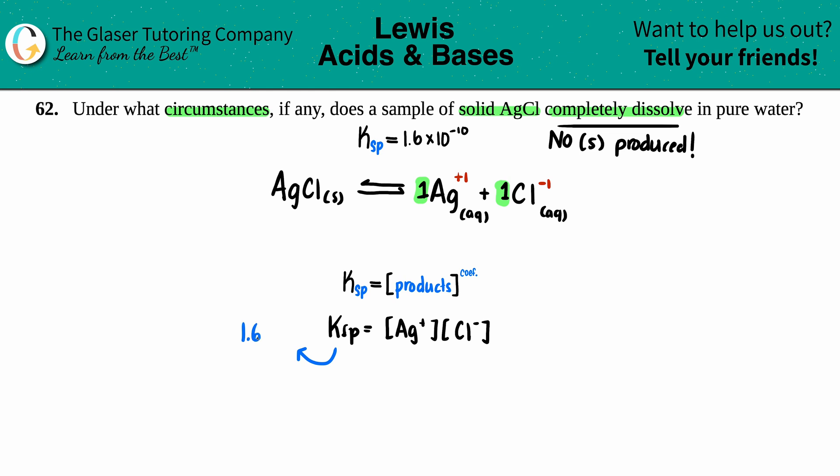Now we do know the Ksp value that we looked in the back of the book - 1.6 times 10 to the negative 10 - but I don't know what the Ag+ and the Cl- concentration is. That's when we just label them as variables. Let's start with the Ag. I say I don't know how much I have, so I'm just going to label it as x. And technically you would bring the coefficient down, but one times x is the same thing as just saying x. Same thing for the chlorine - it would be 1x, but since one times x is just x, we'll just leave it as x. These are your two variables that are going to be plugged in.